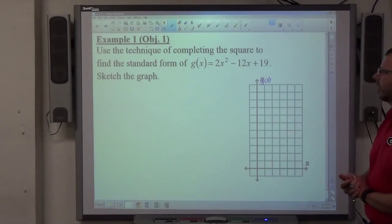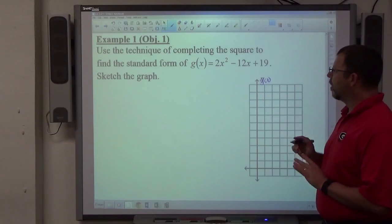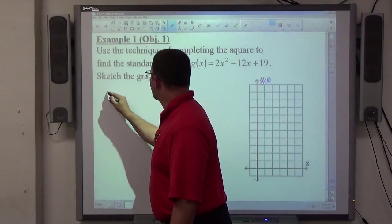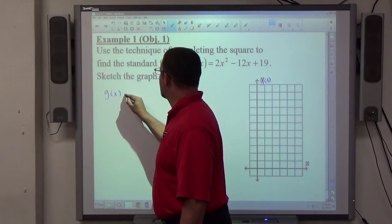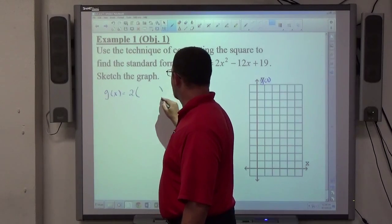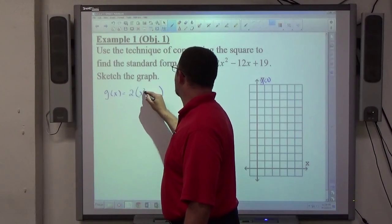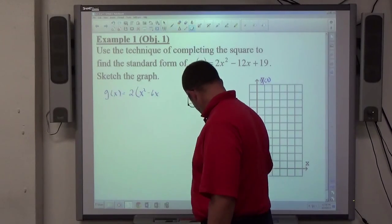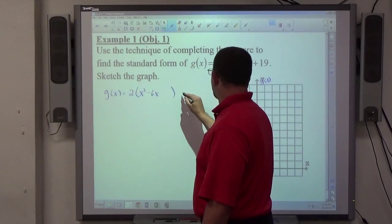So the completing the square technique goes like this. First off, I want to extract my lead coefficient. So my first step, if I'm going to complete the square, is take my 2 out, and that's going to get me x squared minus 6x. I've got to leave a little space.